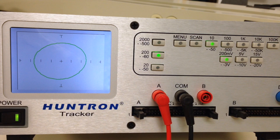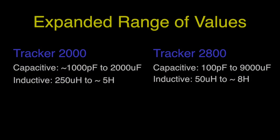The ability for the 2800 to drop to a 200 millivolt range allows the user to essentially isolate passive components that are in parallel with a semiconductor. The expanded resistance and frequency settings of the tracker 2800 allow it to measure a much broader range of capacitive and inductive values.